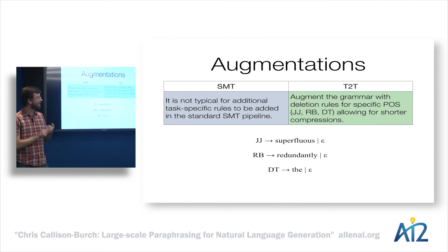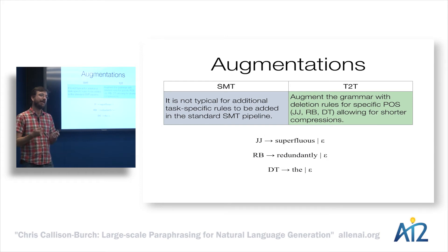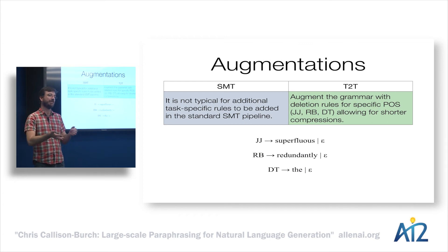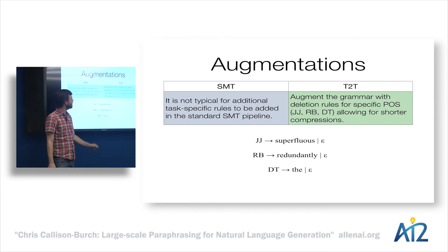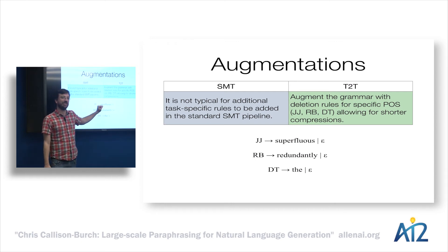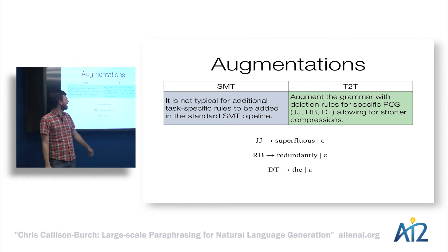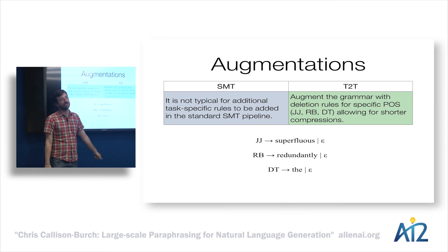Another difference between statistical MT and these text-to-text generation tasks is that we might be interested in augmenting our paraphrase grammar with rules that model the particular tasks we're interested in. We don't typically insert rules into the statistical MT system — we only take those that are learned. But in tasks like compression, we might insert rules where we know that adjectives are things more likely to be deleted, or adverbs similarly. So for every adjective, we could rewrite it as the empty string.